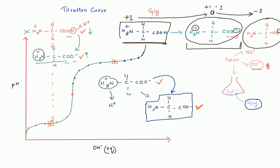When glycine is in the form where it has equal positive and negative charges and the overall charge is zero, we call this form a zwitterion. The zwitterion has NH3⁺ (positive charge) and COO⁻ (negative charge), so the overall charge is zero. This is the zwitterion form of glycine.